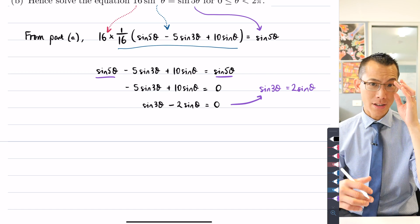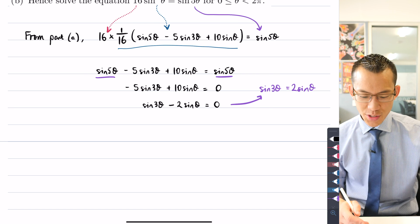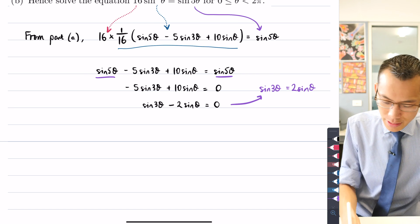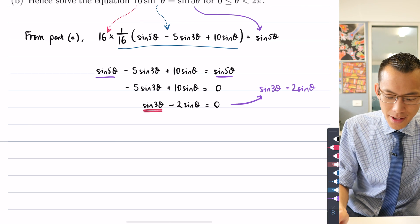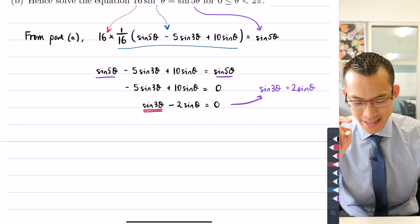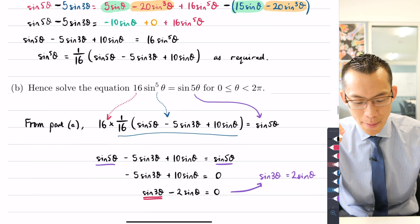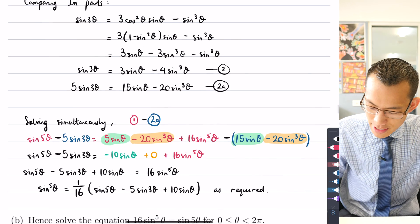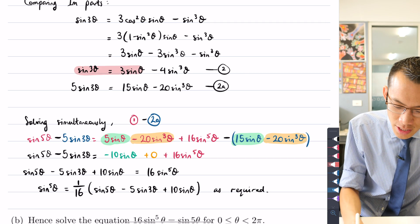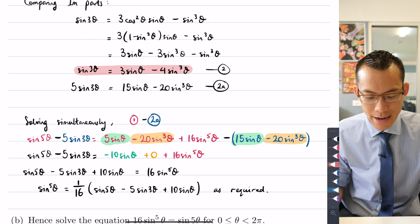But for now, actually keeping everything on the left-hand side and having it equal to 0 is advantageous to me because if you look closely here, sin 3θ, I know what sin 3θ is in simpler terms that will allow me to simplify what's going on here. If you go back to part A, you can see right here, I got this result for sin 3θ.